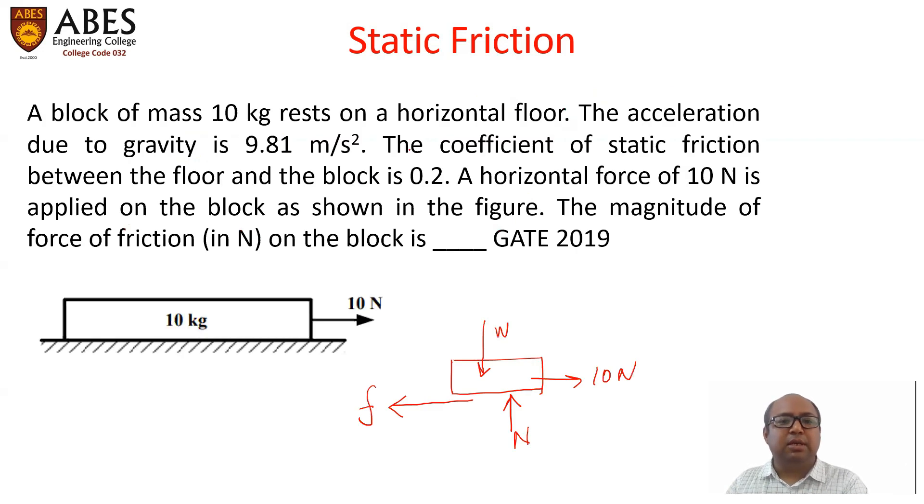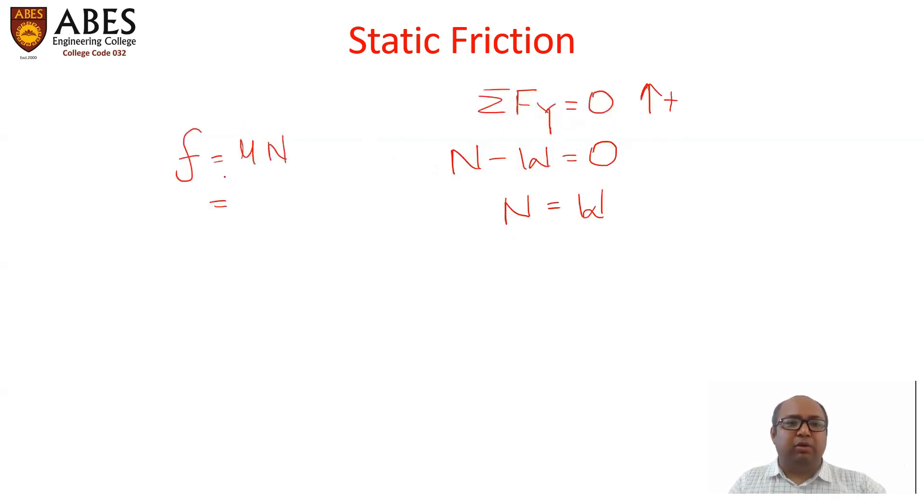So putting these two values, 0.2, and because we have to find weight, it will be 10 multiplied by g. Let us put these values together and multiply: 0.2 multiplied by 10 multiplied by 9.81. This value will be equal to 19.62 Newton.